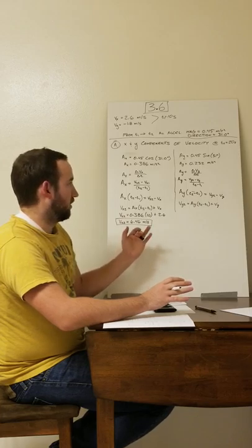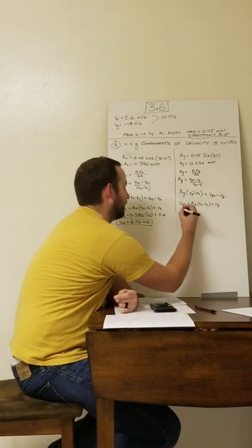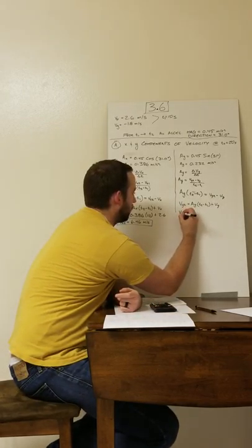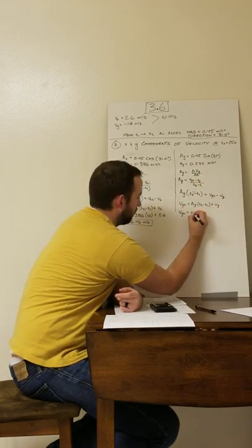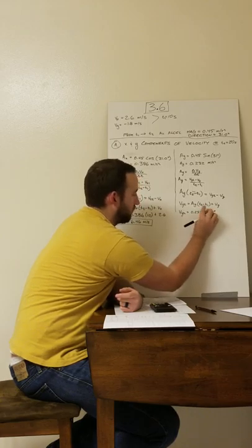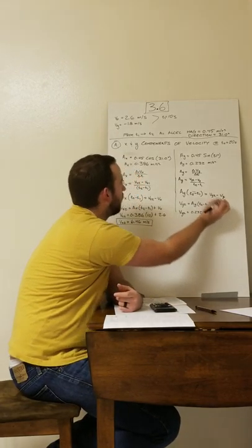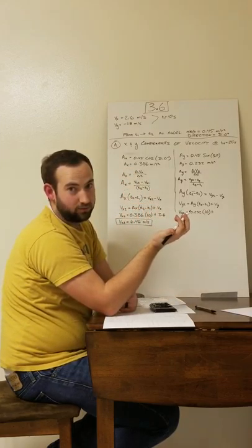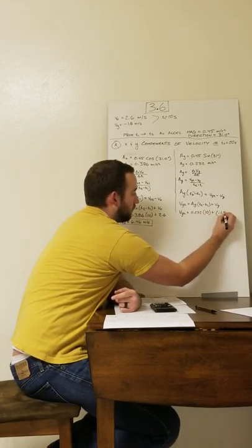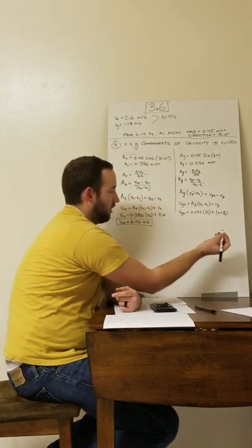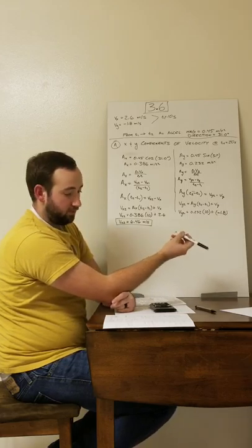Now finishing Part A with the y-component: vy2 equals ay times (t2 minus t1) plus vy1, so that's 0.232 times 10 plus negative 1.8. Plugging that into the calculator gives vy2 equals 0.52 meters per second.